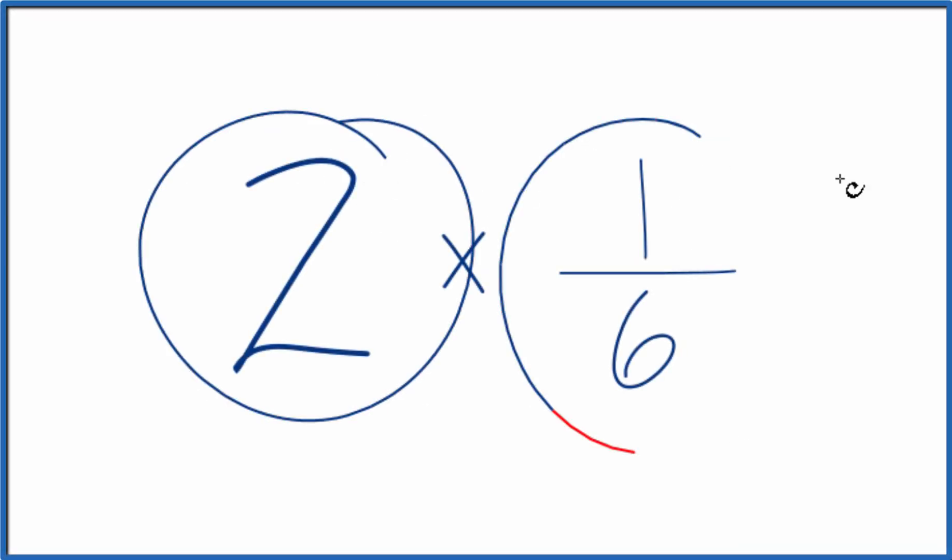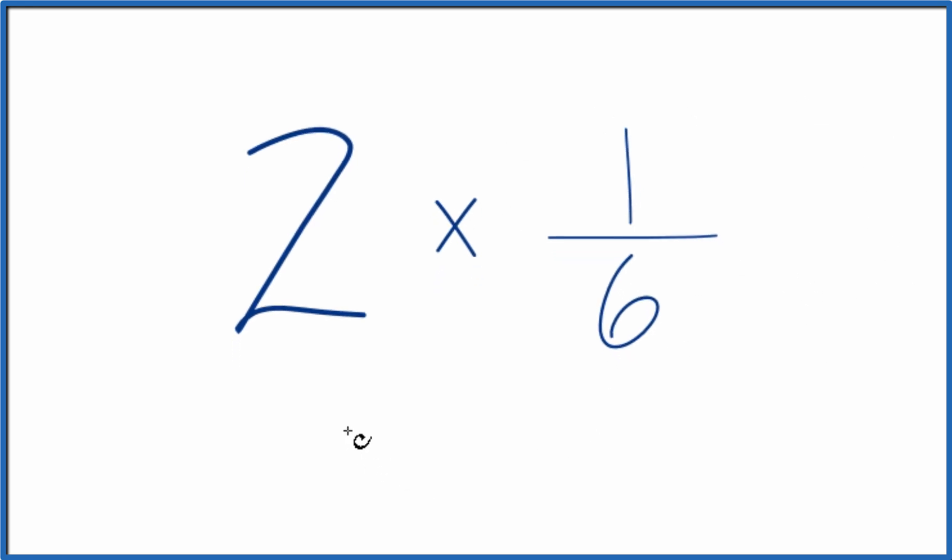Let's multiply two times one-sixth. Here's how you can do that. So you could just add one-sixth up two times, and that would give you two times one-sixth. That'd be the correct answer, like this.